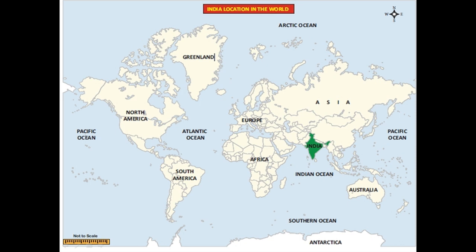Refer to the world map. The world consists of seven continents: Greenland, North America, South America, Europe, Africa, Asia, and Australia. India is called a subcontinent and it is located within the continent of Asia.